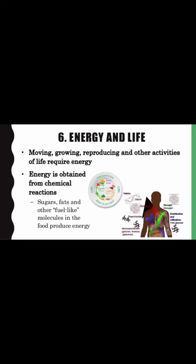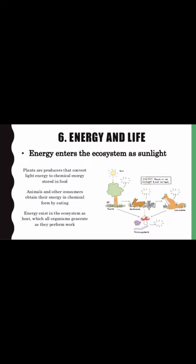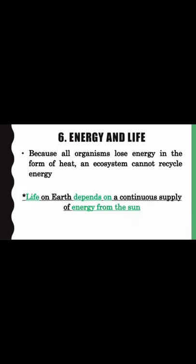Theme 6 — Energy and life: moving, growing, reproducing, and other activities of life require energy. Energy is obtained from chemical reactions — sugars, fats, and other fuel-like molecules in food produce energy. Energy enters the ecosystem as sunlight; plants are producers that convert light energy to chemical energy stored in food. Animals and other consumers obtain their energy in chemical form by eating. Energy exits the ecosystem as heat, which all organisms generate as they perform work. Because all organisms lose energy in the form of heat, an ecosystem cannot recycle energy. Life on Earth depends on a continuous supply of energy from the sun.